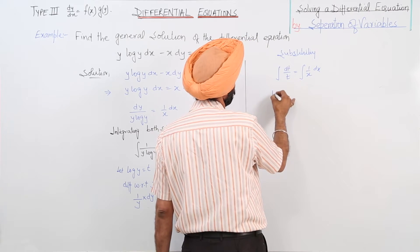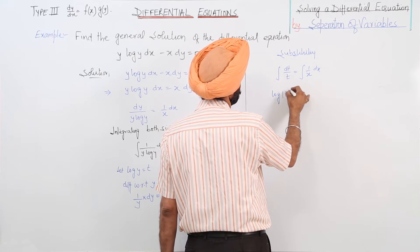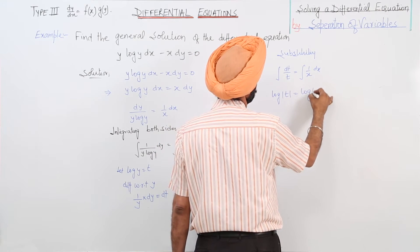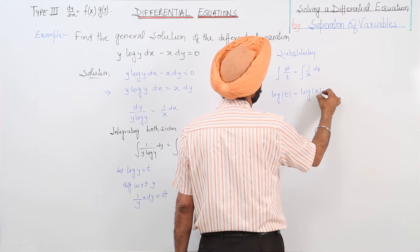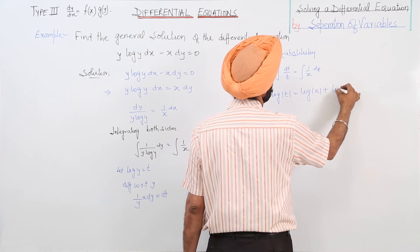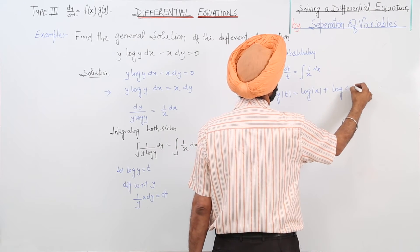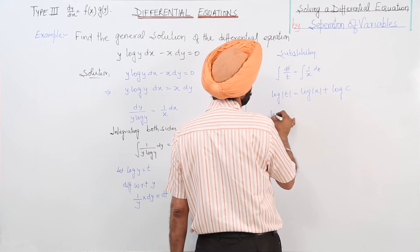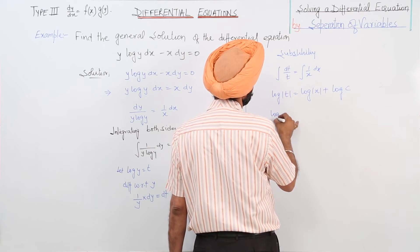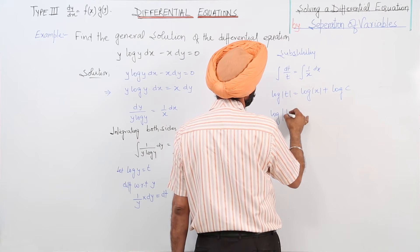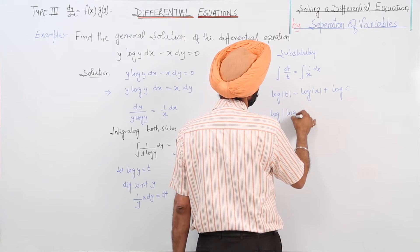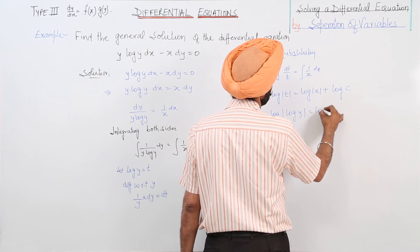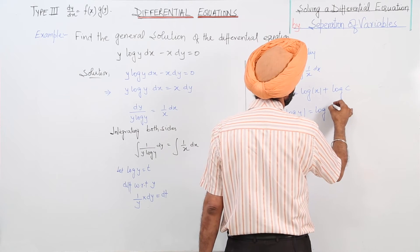This becomes log mod t is equal to log x plus log c. Now substituting back, log(log y) is equal to log(xc).